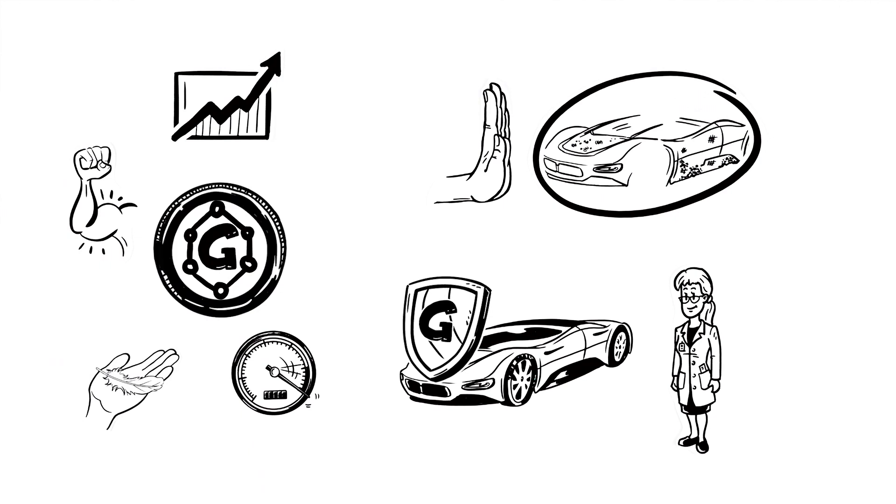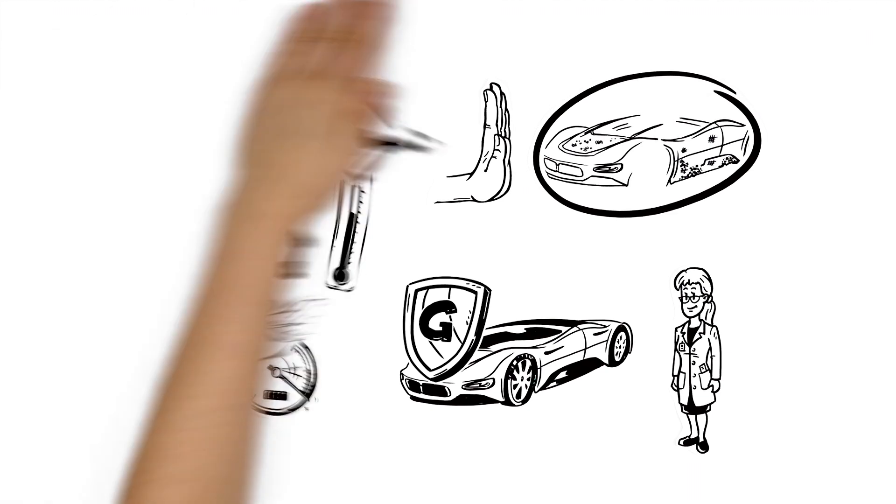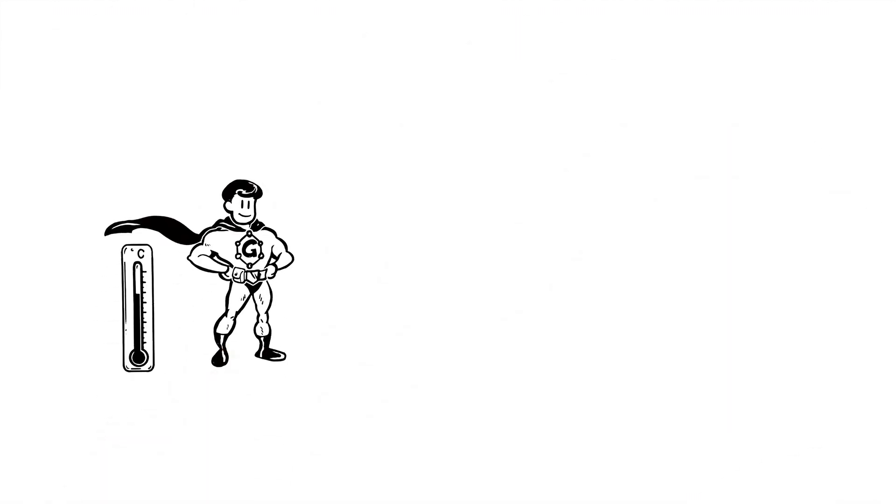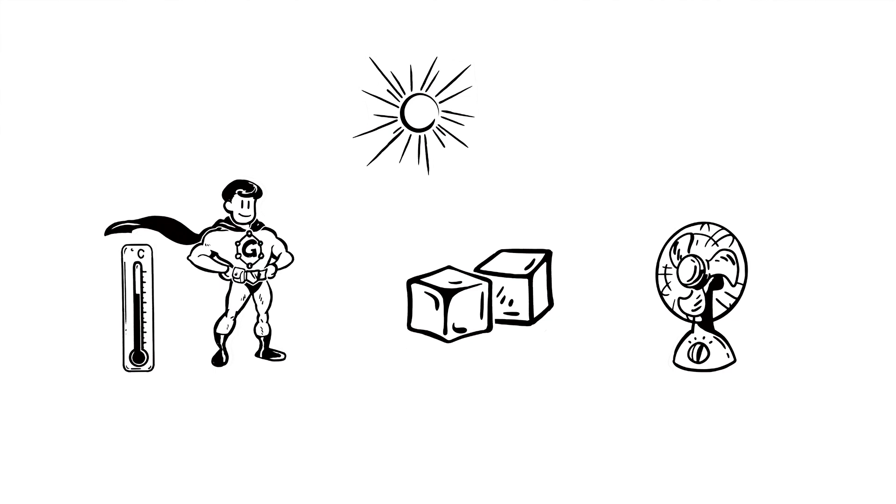A graphene coating inside the wheel could also reduce temperature build-up. Graphene is thermally conductive, heating things when they need it and cooling them off when they get too hot.